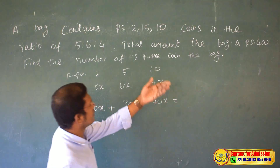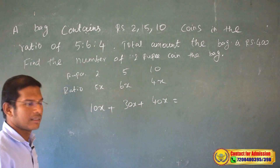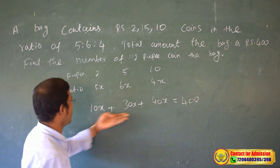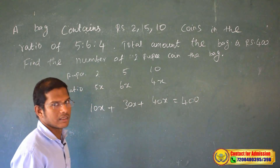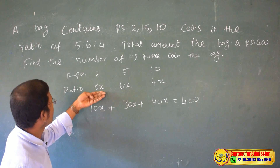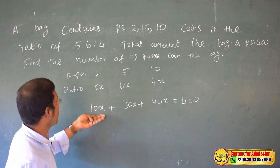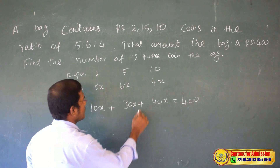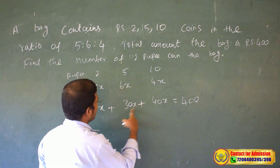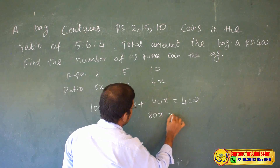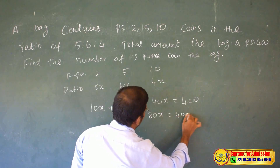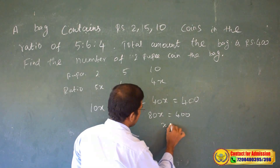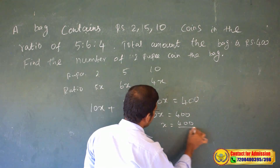Now, 10x + 30x + 40x = 80x. And 80x equals 400. So x is equal to 400 divided by 80, which gives x = 5.